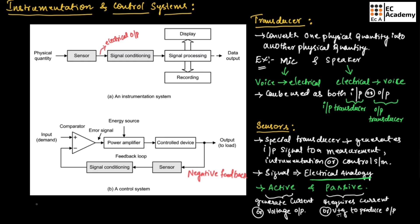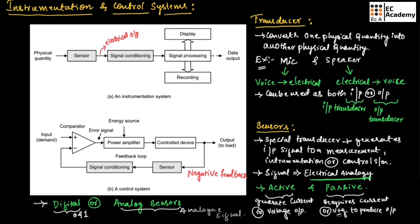Sensors can also be classified as digital or analog sensors. The output of digital sensors will be in the form of 0 and 1, while the output of analog sensors will be an analogous signal. This concludes our overview of instrumentation and control systems, as well as transducers and sensors. Hope you have understood the topic. Thank you.